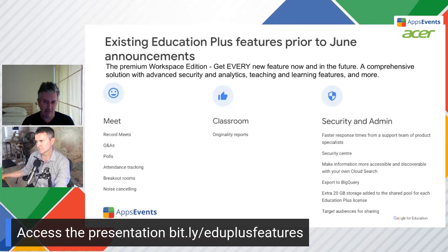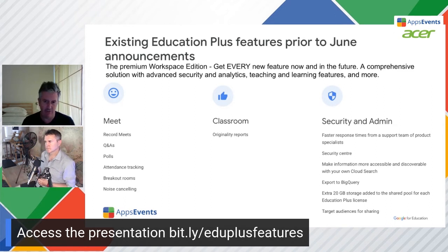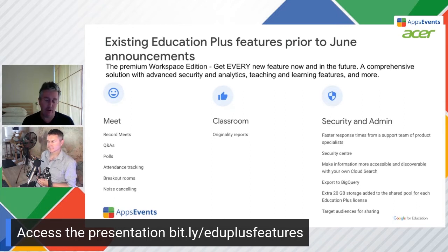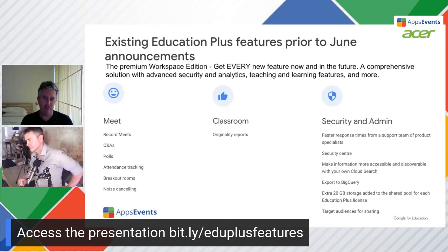We won't go through all the security and admin features, but we'll highlight a couple. You are getting a faster response time from Google — premium support, which is very good to be aware of. There's also a Security Center and export to BigQuery. BigQuery is enterprise-level analysis software; you can pull out basically any of the data from within your domain to examine and export it to Data Studio or wherever. You're also getting 20 gigabytes of extra storage per license.